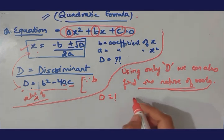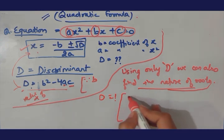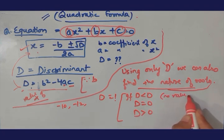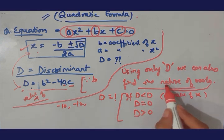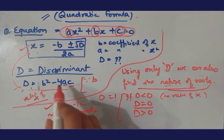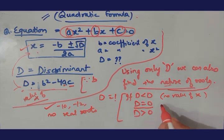If the value of D is less than 0, whenever there will be negative value, there will be no value of x or you can say no real roots. Nature will be asked, you will say no real roots in this case. In the first case, if D is equal to 0, there will be two equal real roots.